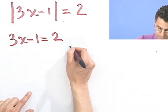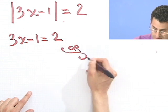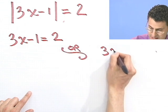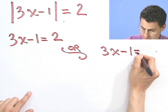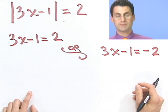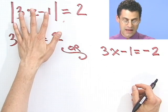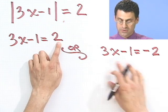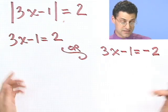And the other possibility, so or, we have 3x minus 1 equals negative 2. Always set them up the same way. We have either absolute equals something, thing equals this, or the thing equals negative that. And I need to solve away.